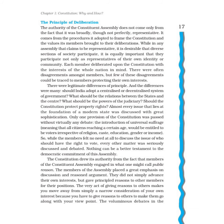Constitution ka sirf ek hi aisa provision tha jo karibe karibe bina kisi disputes ke, bina kisi differences ke pass ho gaya — aur woh tha universal suffrage. Universal suffrage ka matlab hai ki country ke andar kisi bhi person ke saath discrimination nahi honi chahiye, chahe religion, caste, education, gender, ya income ke base pe. Har person ko vote dene ka adhikar hoga us particular age ke base pe jo constitution makers ke through decide ki jayegi.